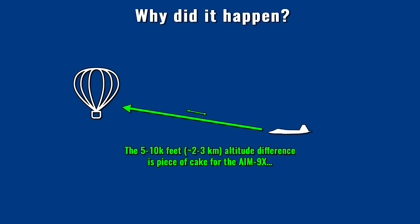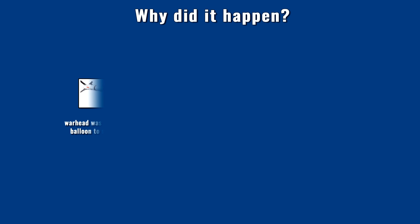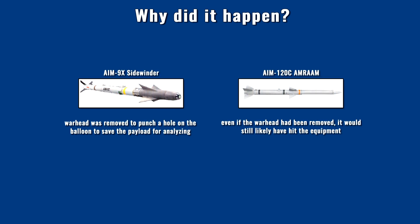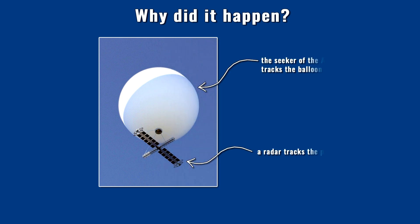The Raptor flew at 58,000 feet when the missile was launched, and the balloon was hit somewhere between 60,000 and 65,000 feet. The warhead of the Sidewinder was removed — it flew through the balloon, which collapsed following the hit. The Raptor shot down the target using minimal firepower, as it could have used the longer-range AMRAAM missile. However, due to its active radar guidance, the AMRAAM would very likely have hit the payload underneath rather than the balloon, since the solar panels and metal parts represented a far larger reflective surface. Without a warhead, it would have destroyed a valuable payload that could otherwise be analyzed.